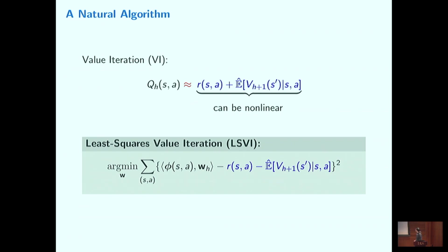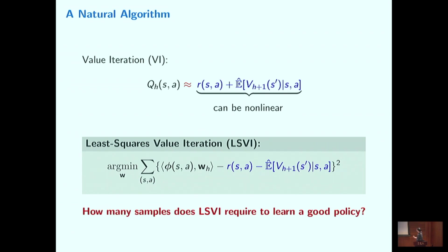This gives us the algorithm called least squares value iteration. Then there's a very fundamental question: for this basic algorithm, how many samples does it need to learn a reasonably good policy in the linear function approximation setting? Although this question sounds simple and basic, it turns out we don't really have a good understanding of this problem.